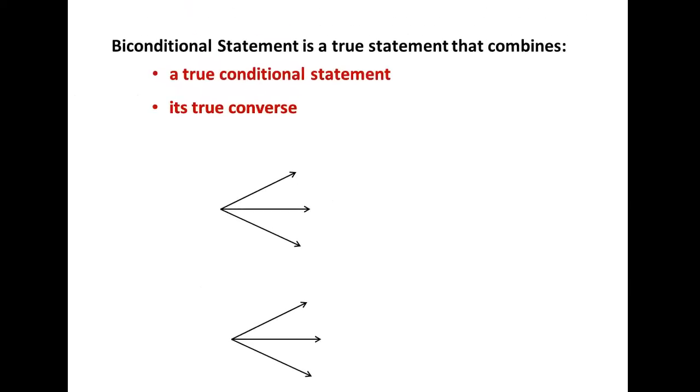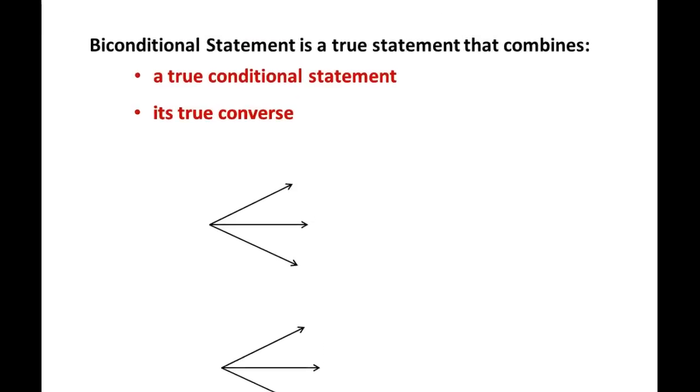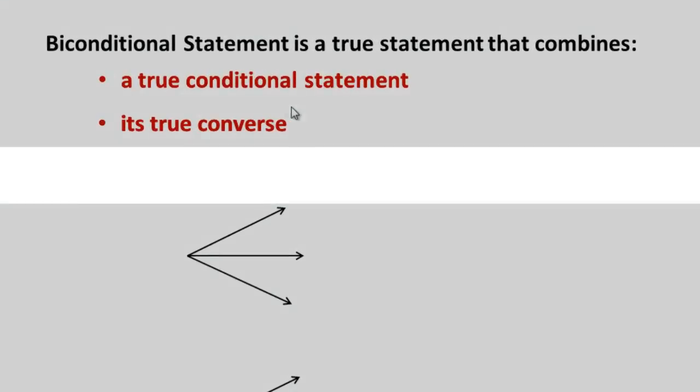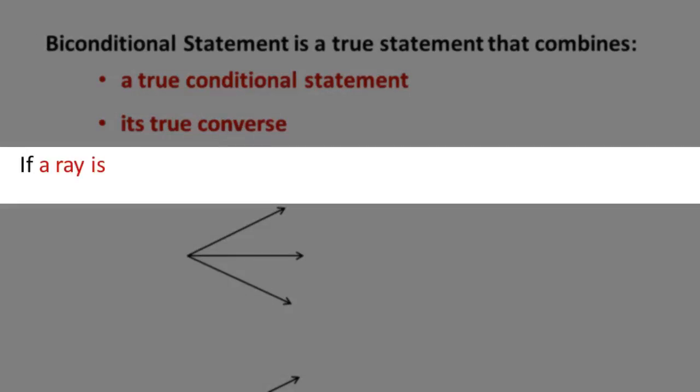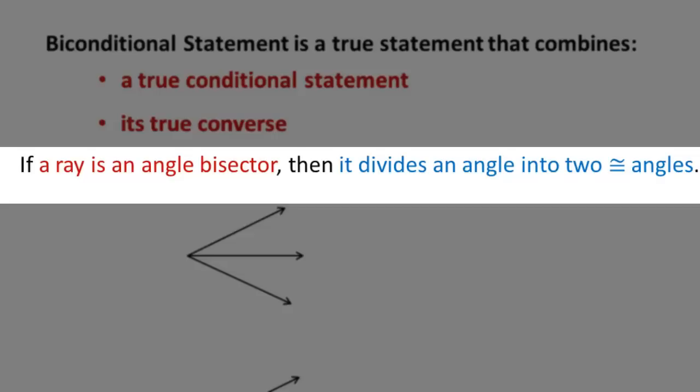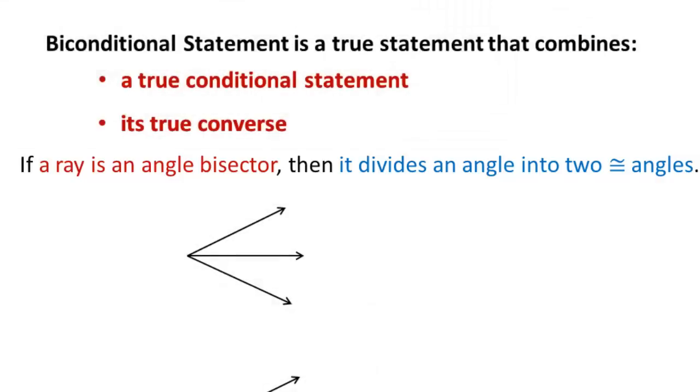Let's take a look at our first conditional statement and see if it meets these two requirements. If a ray is an angle bisector, then it divides an angle into two congruent angles. So let's pick this apart. If we have a ray and we're told that it's an angle bisector, then it would divide the angle into two congruent angles. Yes, that is a true statement. We learned that in previous chapters.